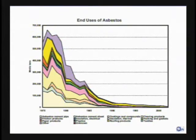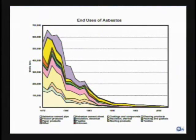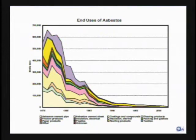U.S. asbestos production was relatively insignificant in the first part of the 20th century, with an average production of less than 10,000 metric tons per year until 1936. Production began to increase into World War II and by the mid-60s had reached over 100,000 tons per year. In 1973, U.S. production peaked at 136,000 tons per year and began to decline rapidly after that to 5,000 tons in 2001, and down to none when the last asbestos mine closed in the U.S. in 2002.